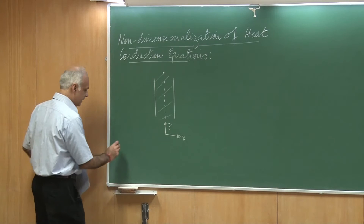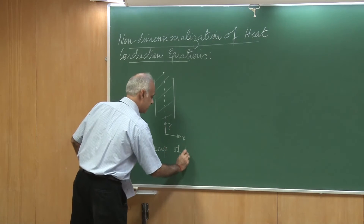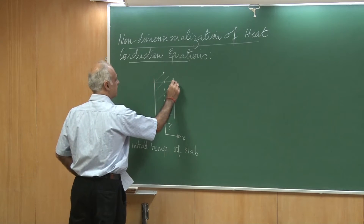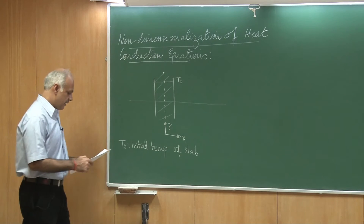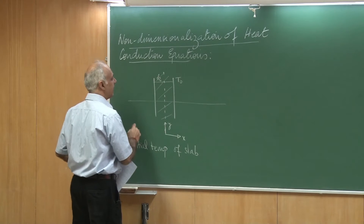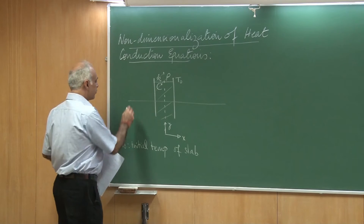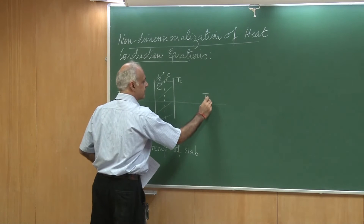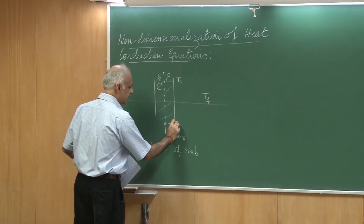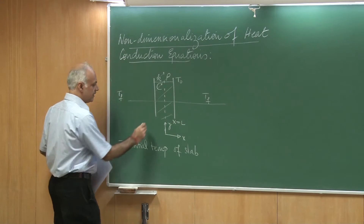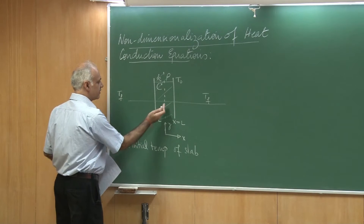Let us say the slab is initially at a temperature T0 — that is the initial temperature of the slab. The conductivity of the slab is K, the density of the material is rho, and capital C is the specific heat capacity. There is fluid at temperature Tf on either side and we are going to apply convection conditions on the two ends. The half thickness of the slab is L, so x goes from minus L to plus L. There is symmetry with respect to the y axis.